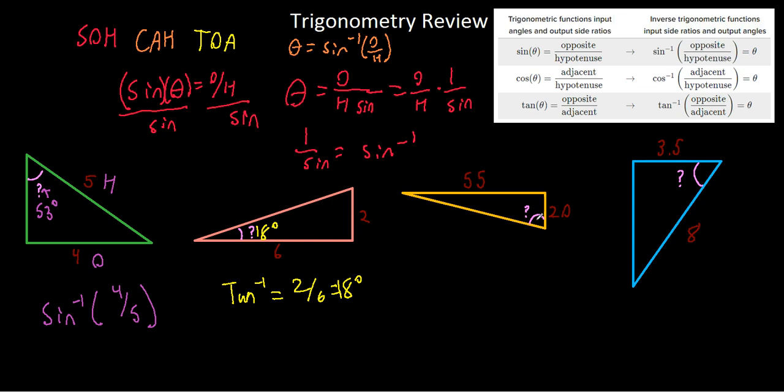Well, the next one, we're given the opposite and adjacent to the angle again. So it's still tangent, still the inverse tangent because we're looking for the angle. What's the opposite? It's 55 over 20.